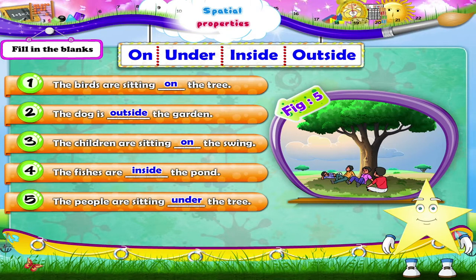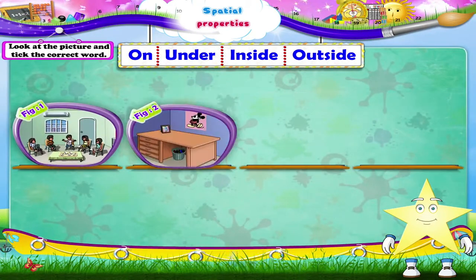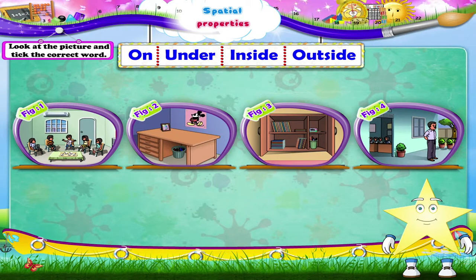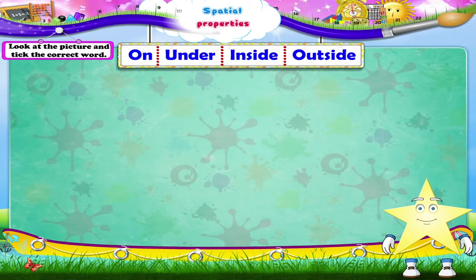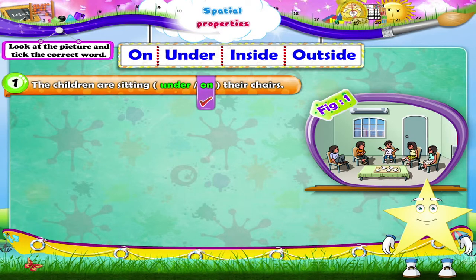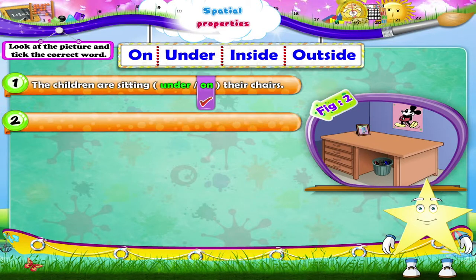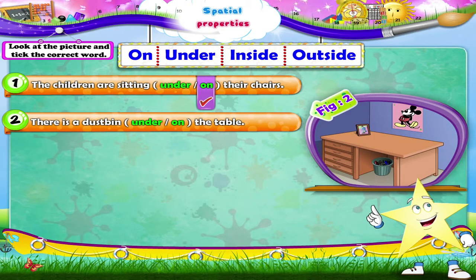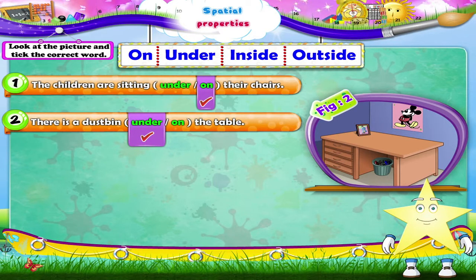Did you understand where to use the word, Starry? Then look at the given picture and tick the correct word. The first statement is: the children are sitting under or on their chairs. The correct word is on — the children are sitting on their chairs. There is a dustbin under or on the table. Which is the correct word, Starry? Yes, under. There is a dustbin under the table.